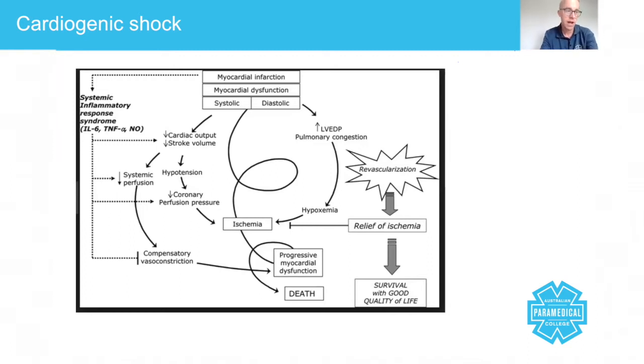What you can see here on the right is that the moment we're able to revascularize, in other words, put a stent in, for example, it relieves this ischemia because at the center of this entire diagram is ischemia, lack of oxygen.